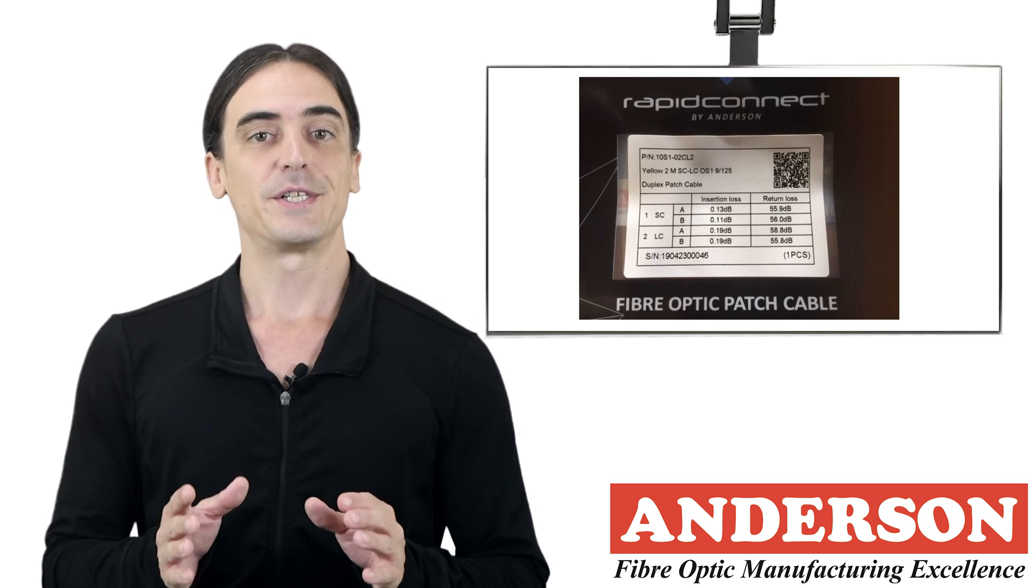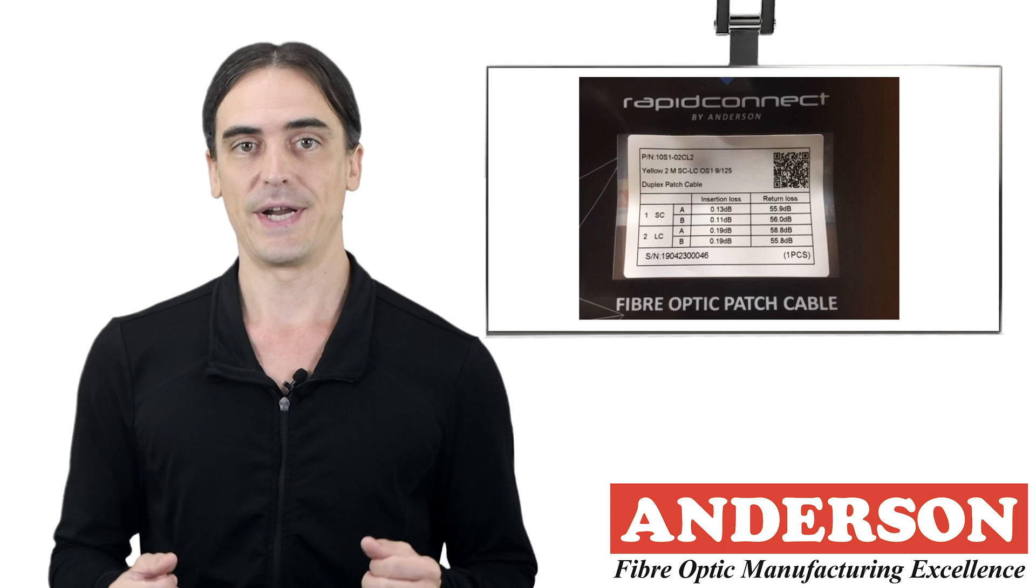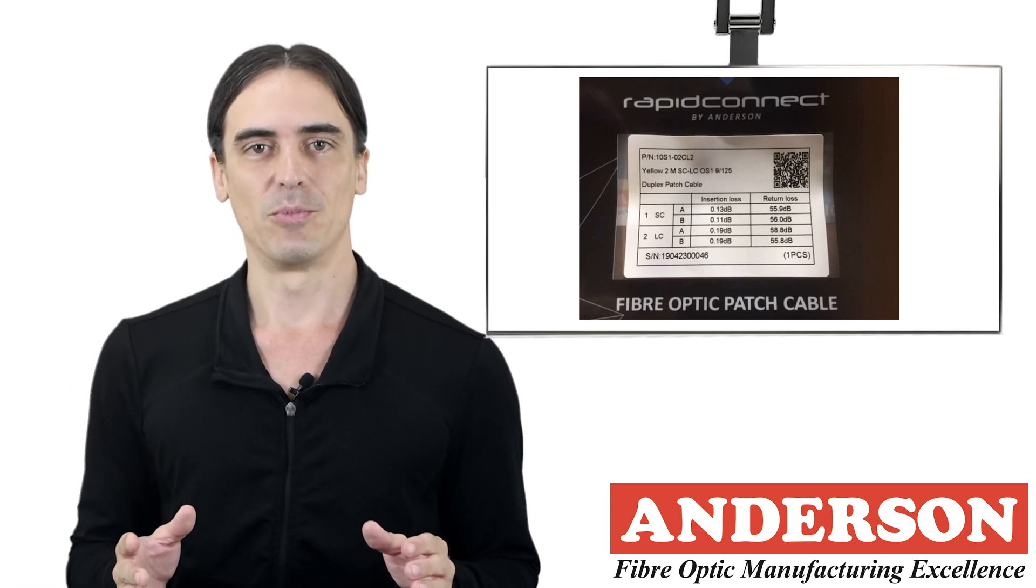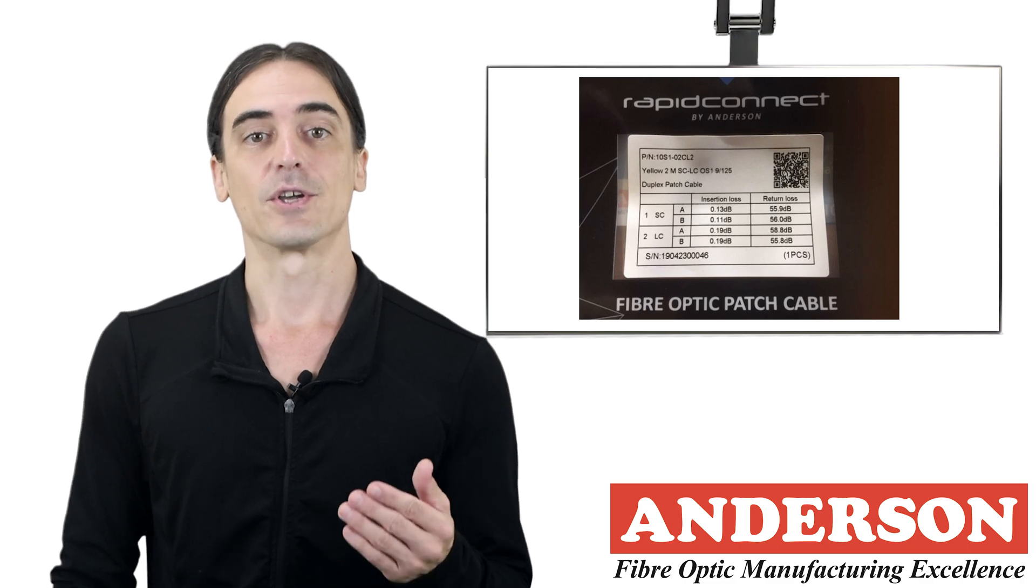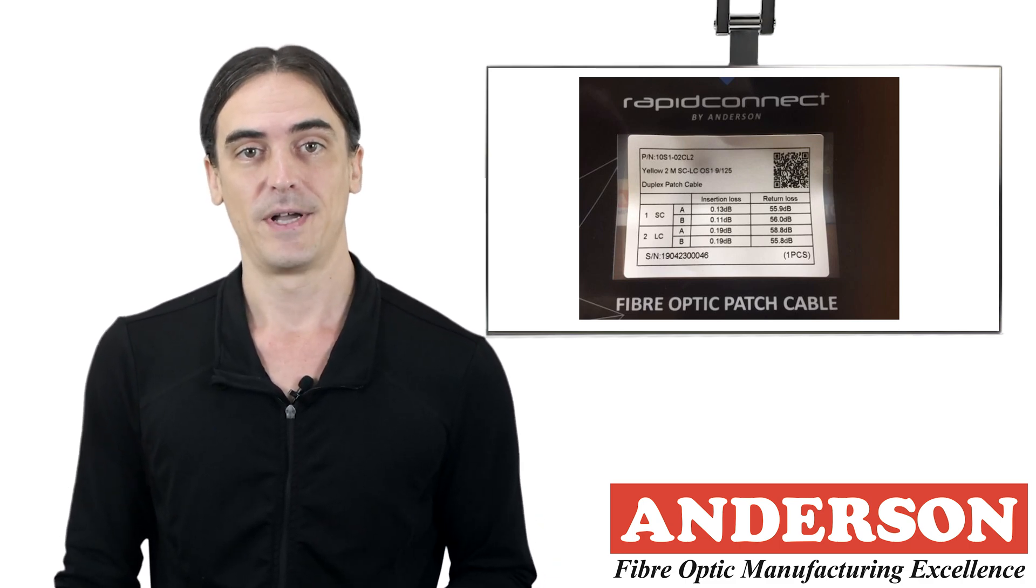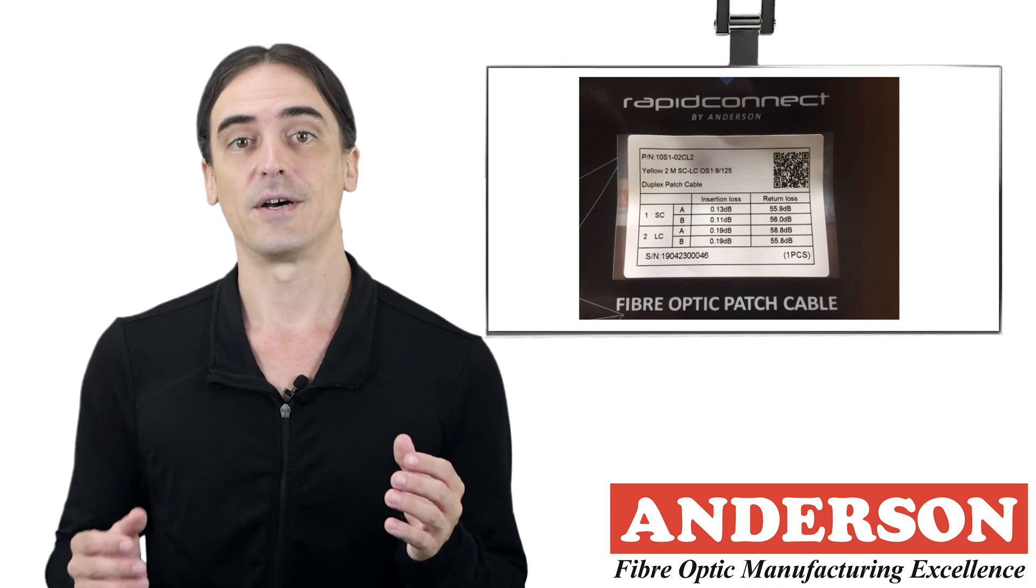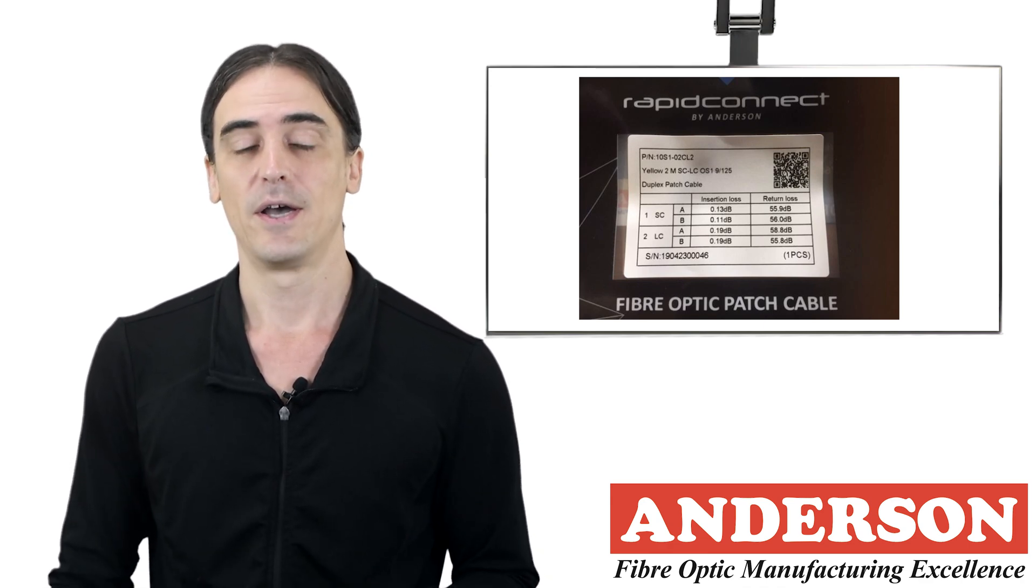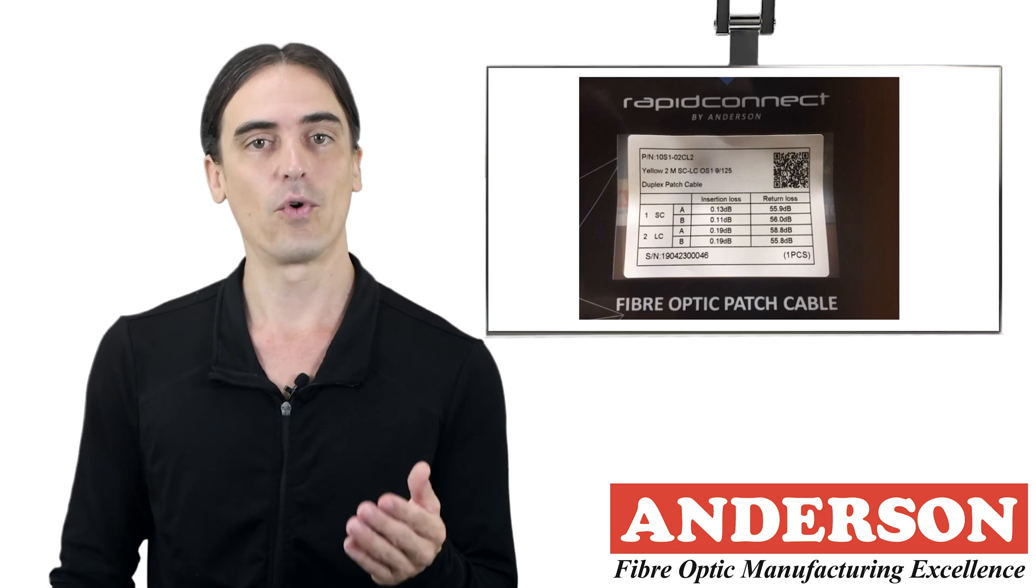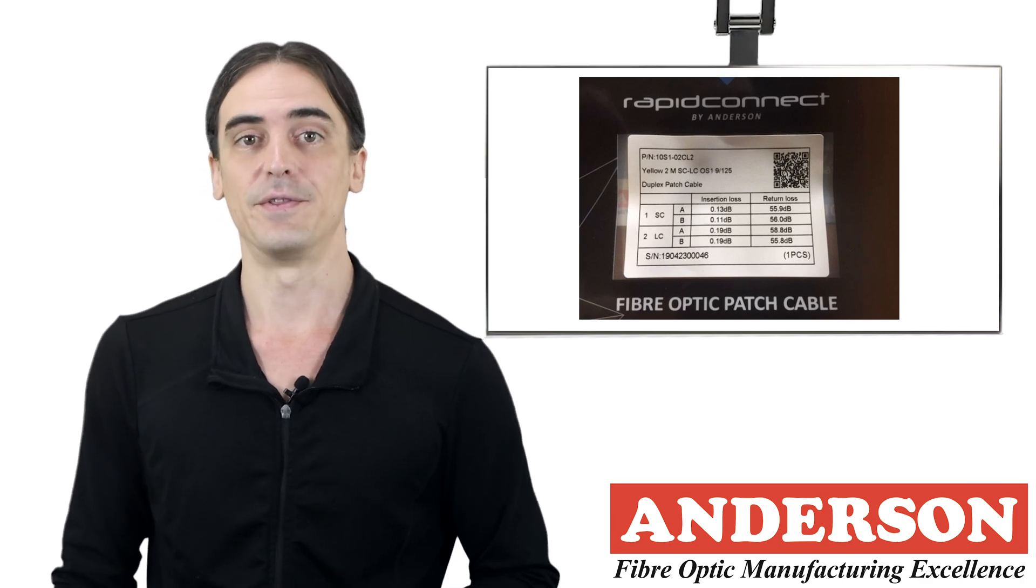You will need to know the transmission speed you wish your network to operate at. With so many options available, this will need to be thought through very carefully. Typically, this is a cost-driven decision. 1G, 10G, 40G, and 100G are common speeds used in ethernet environments, with talk of 200G, 400G, and 800G in the future.